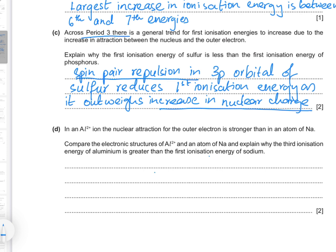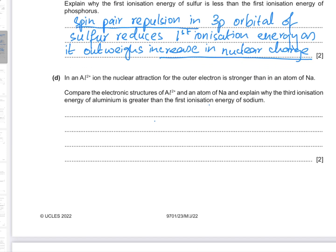Part d: In an aluminium ion, the nuclear attraction for the outer electrons is stronger than in an atom of sodium. Compare the electronic structure of Al²⁺ with an atom of sodium and explain why the third ionization energy of aluminium is greater than the first ionization energy of sodium. Aluminium's atomic number is 13, giving it an electronic configuration of 1s² 2s² 2p⁶ 3s² 3p¹.